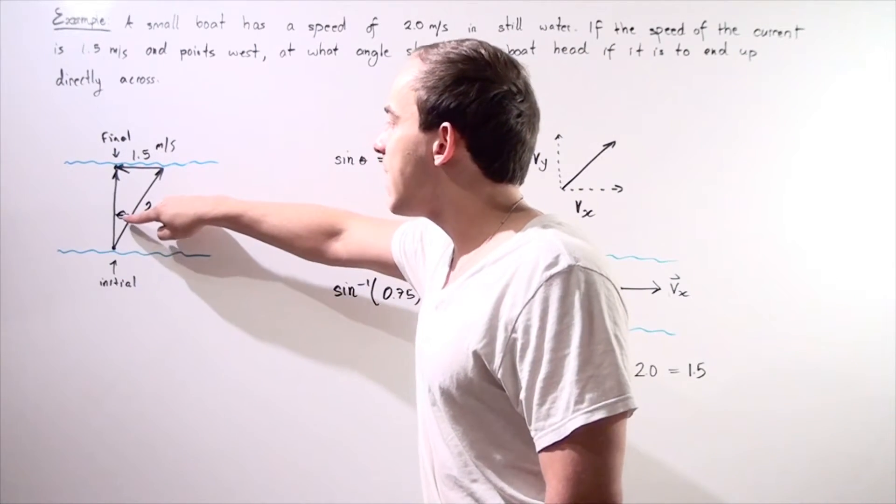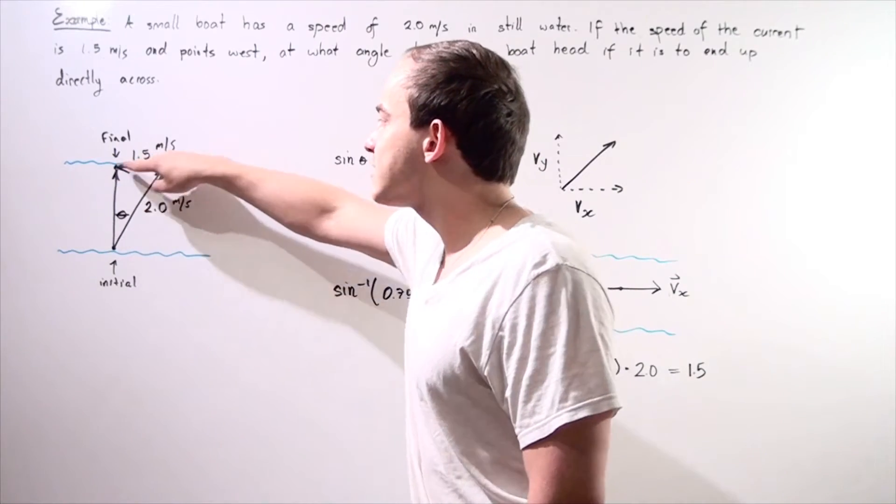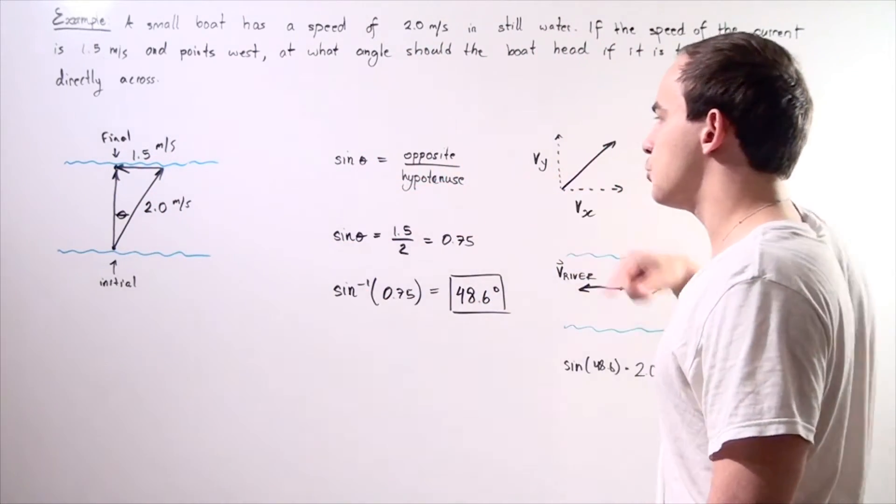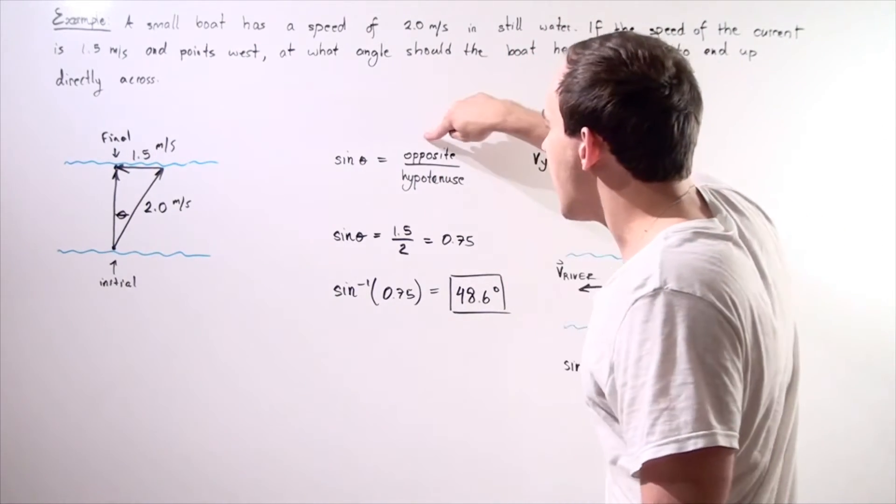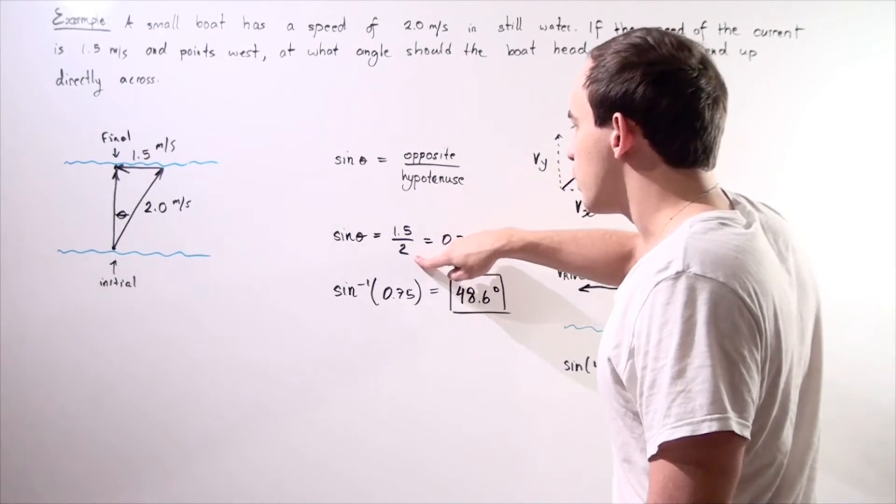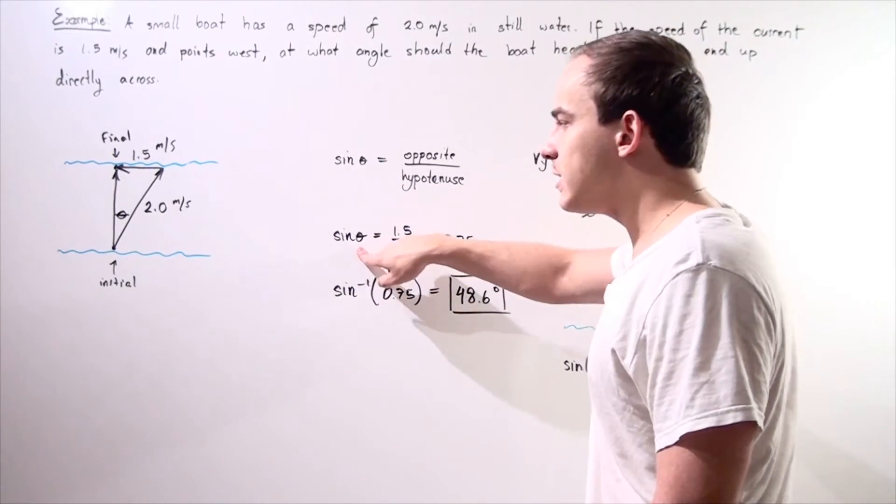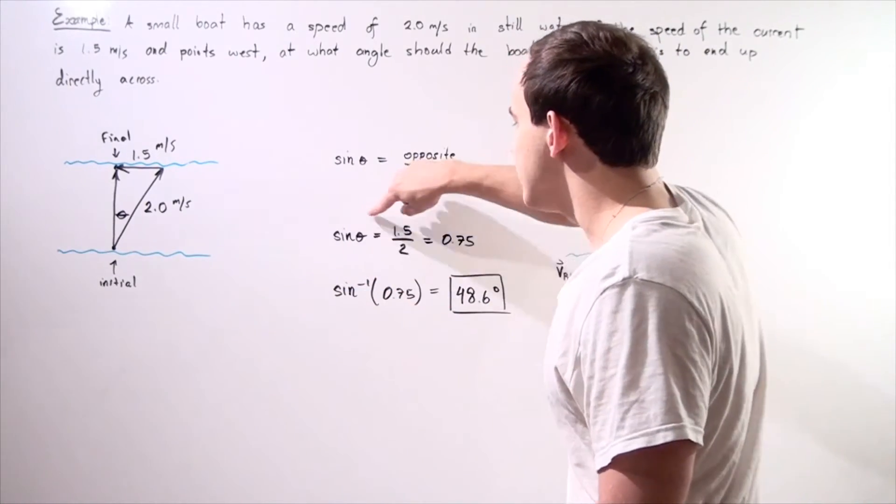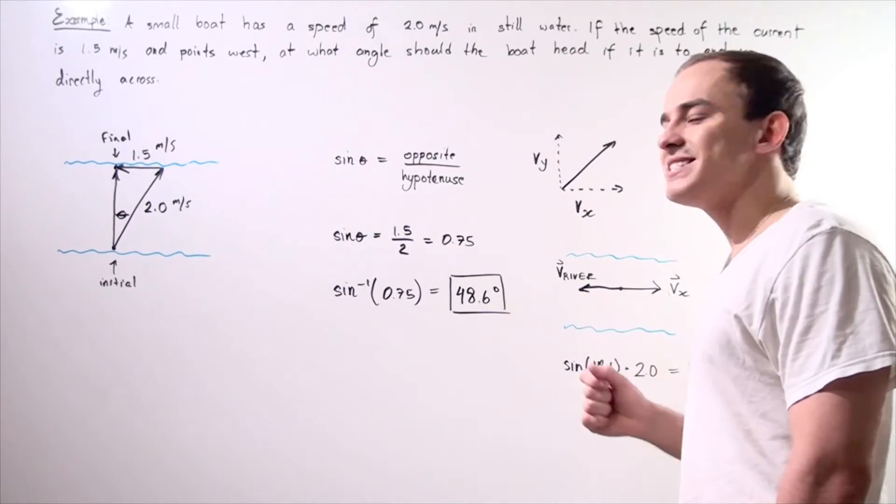Sine of the angle equals the side opposite to the angle divided by our hypotenuse. We plug in our values for the opposite, which is 1.5, and hypotenuse, which is 2. So we get sine of the angle theta equals 0.75.